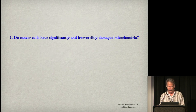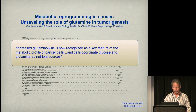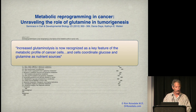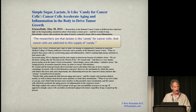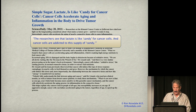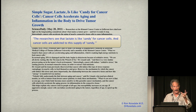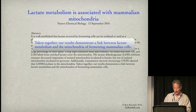Do cancer cells really have significantly and irreversibly damaged mitochondria? Glutamine is a well-known fuel for cancer — cancer gobbles it up — and glutamine is metabolized in mitochondria. If mitochondria are damaged, how can cancer use so much glutamine? Not just glutamine but lactate: glycolysis produces lots of lactate, and then the cancer eats that lactate. Researchers say lactate is like candy for cancer cells. Lactate is also used to penetrate and implant in tissues. Taken together, results demonstrate a link between lactate metabolism and the mitochondria of fermenting mammalian cells — lactate is utilized in mitochondria. They can't be too damaged.